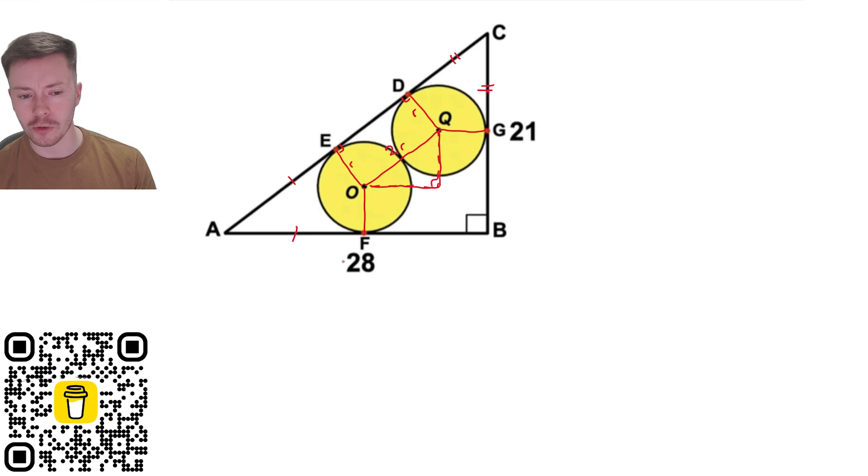Now the next thing you might have wanted to do this earlier actually is work out the full length of this side here so the full length of this side by Pythagoras is going to be 35.